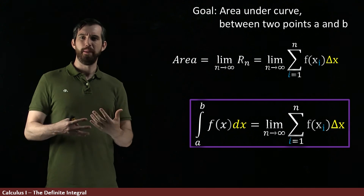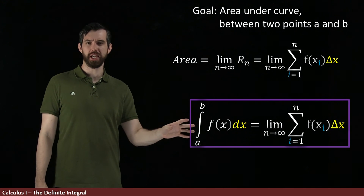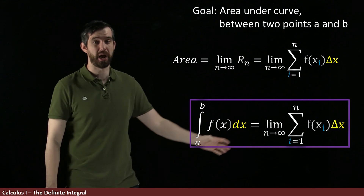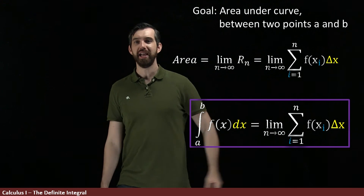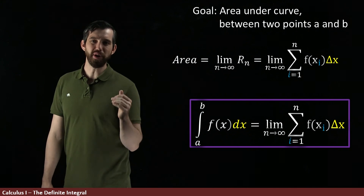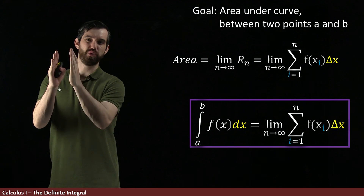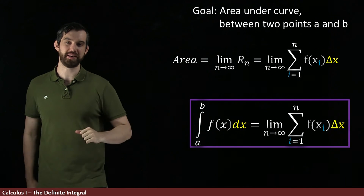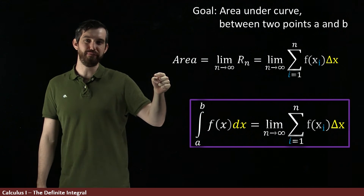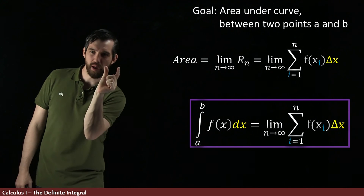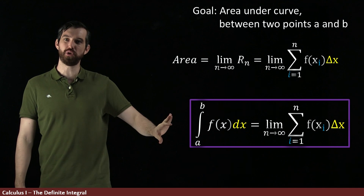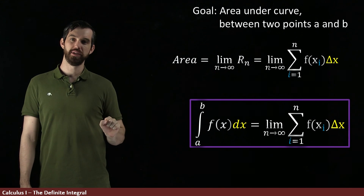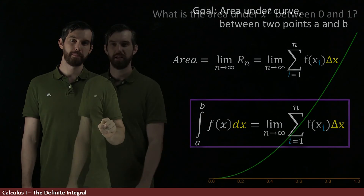The big-picture takeaway is that an integral sign is basically just a sum — but a sum where instead of taking discrete separate points and adding up rectangles, in the limit as n goes to infinity the rectangles get smaller and smaller, and you're taking a sort of infinite sum. That's what the symbol denotes.